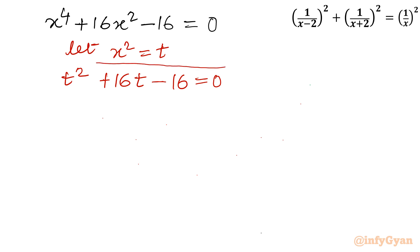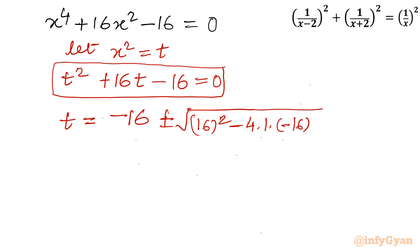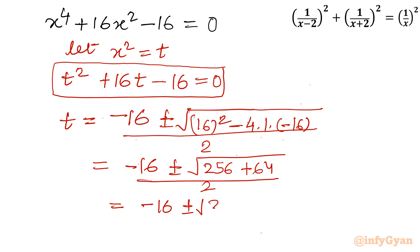This is a quadratic equation in t. I will apply the quadratic formula: t equals minus b plus or minus the square root of b squared minus 4ac, all divided by 2a. Substituting: t equals minus 16 plus or minus the square root of 16 squared minus 4 times 1 times negative 16, divided by 2. That gives minus 16 plus or minus the square root of 256 plus 64, divided by 2, which is minus 16 plus or minus the square root of 320, divided by 2.